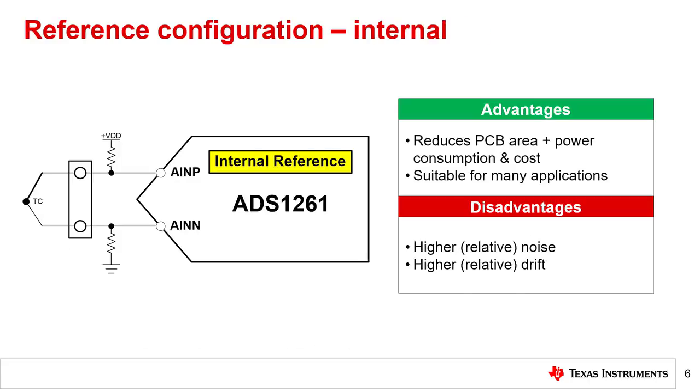As an example, the system shown here is measuring a thermocouple. Thermocouples do not require external excitation to operate, which means you cannot use a ratiometric reference configuration if you needed to measure a thermocouple.